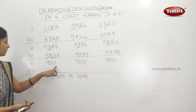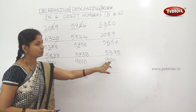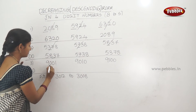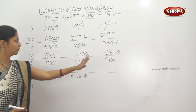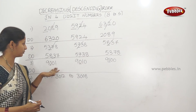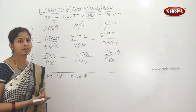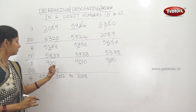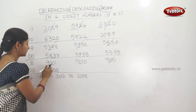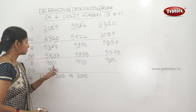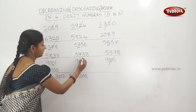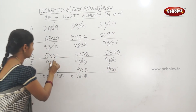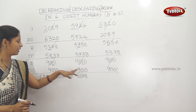Next example: 9,001 — 9,010 — 9,100. First digits are all 9 — same. Second digits: comparing 0 and 1, the bigger is 1, so 9,100 comes first. For the remaining two, both have second digit 0, so we compare the third digit: 0 and 1. The bigger is 1, so 9,010 is next, and 9,001 is last. Descending order: 9,100 — 9,010 — 9,001.